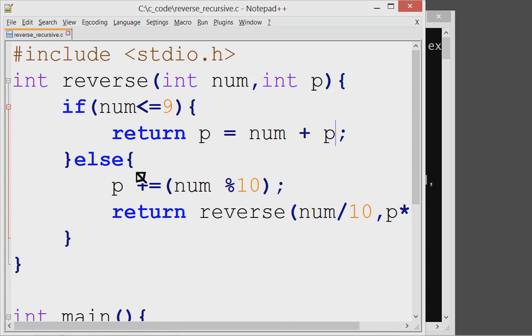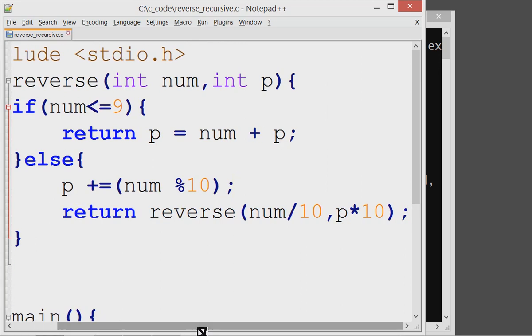If it is two digit or more, then it enters to else part, where the remainder of that number is found, remainder by 10. So in case the number is 234, p will become 0 plus 4, p will become 4. And this function reverse is called again.